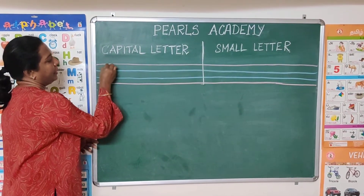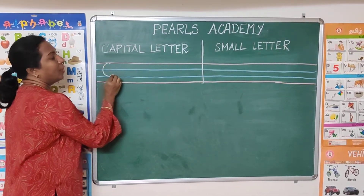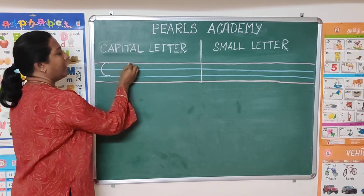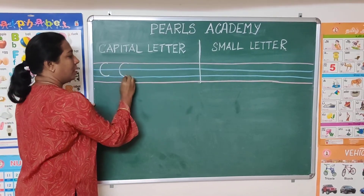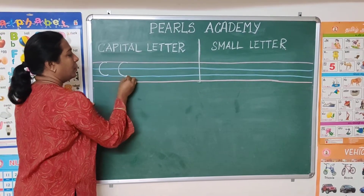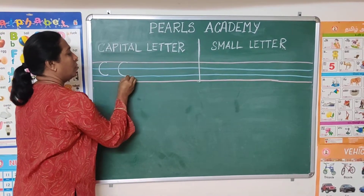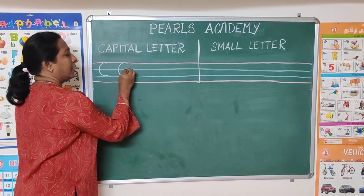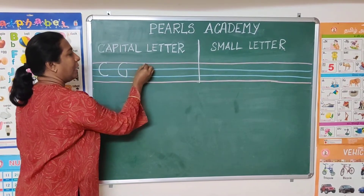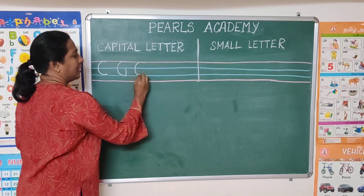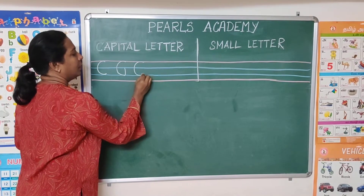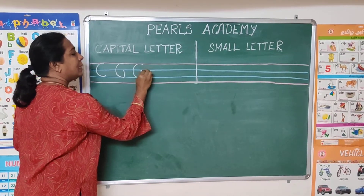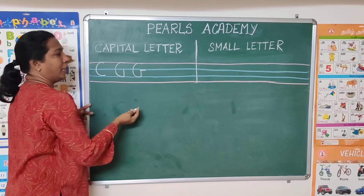The first step is draw a C curve. Second, again draw a C curve. Go touch the blue line and draw a C curve. Touch the top blue line.